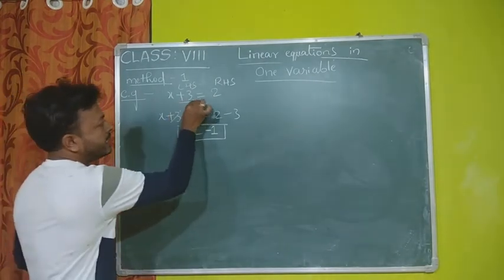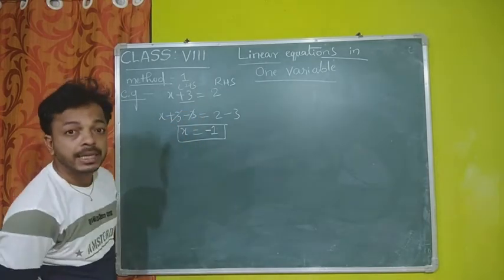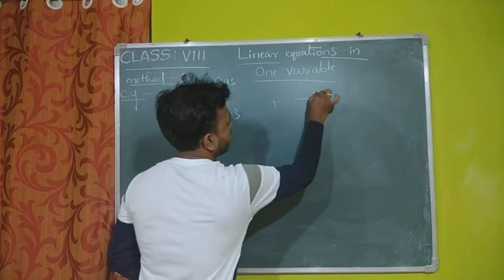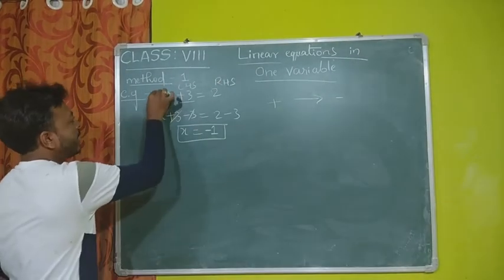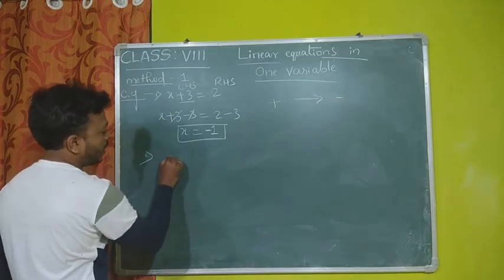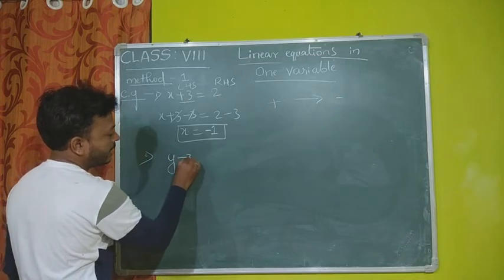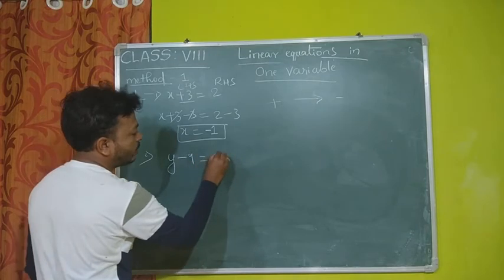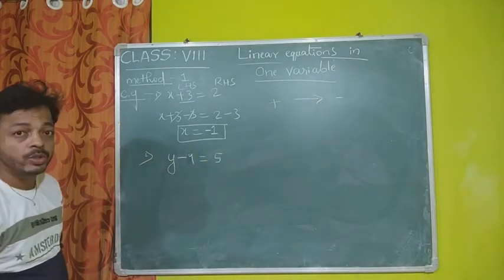What did I do? If there is a plus 3, I took minus 3 — the opposite. If plus is there, we take minus. Let me take one more example. Second example: y minus 9 equal to 5.